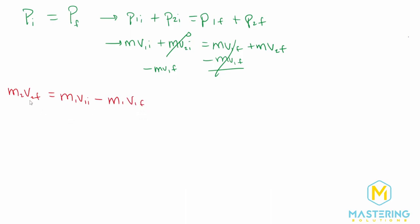So now to isolate the second cart's final velocity, we'll divide both sides of the equation by m2. So now we have our final equation here. Let's write it one more time just so it's more organized.